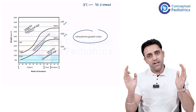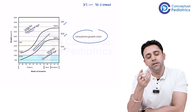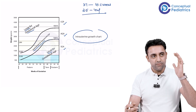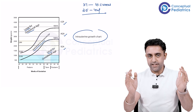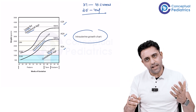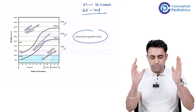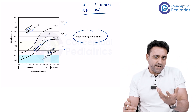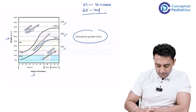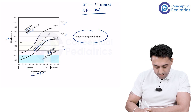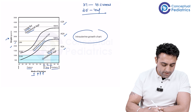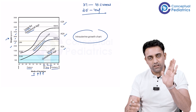Term pregnancy is 37 to 41 completed weeks. The normal weight of a baby expected in that range is 2.5 to 4 kg. So a baby born between 37 to 41 weeks weighing 2.5 to 4 kg — can we say he is appropriate for gestational age? On the growth chart, one axis is the weight of the baby and the other is the gestational age — preterm, term, post-term, from 37 to 42 weeks.